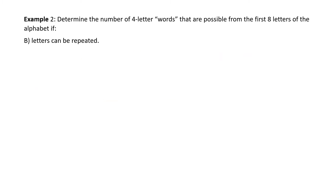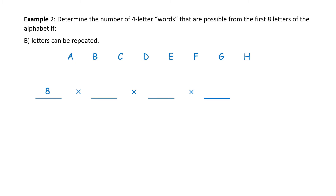Same setup — four-letter words from the first eight letters of the alphabet — but Part B: letters can be repeated. We list all letters A through H and still have four spaces to fill. For the first space we have eight letter choices, and since any letter can be used again, for the second, third, and fourth spaces we still have eight letter choices each. So the number of choices is 8 to the power of 4 — eight times eight times eight times eight — or 4,096 possible different four-letter words.